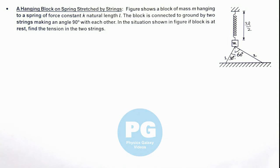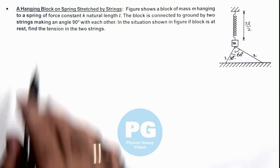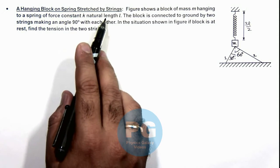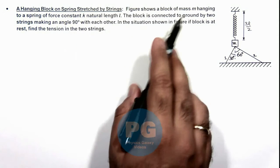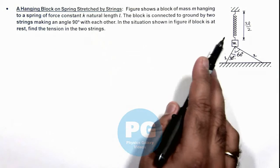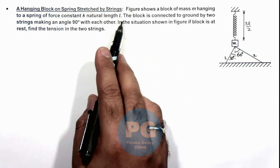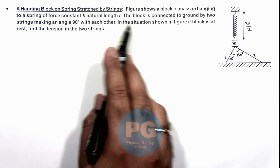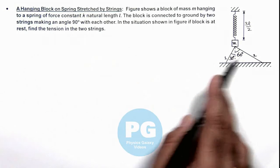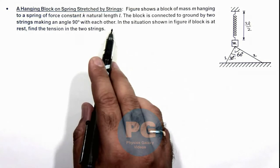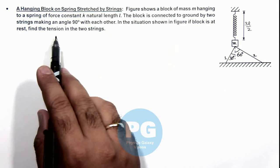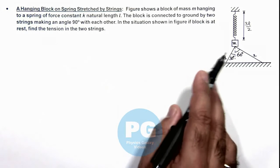In this illustration we'll discuss a hanging block on a spring stretched by strings. The figure shows a block of mass m hanging from a spring of force constant k and natural length l. The block is connected to the ground by 2 strings making an angle of 90 degrees with each other. If the block is at rest, we are required to find the tension in the 2 strings.